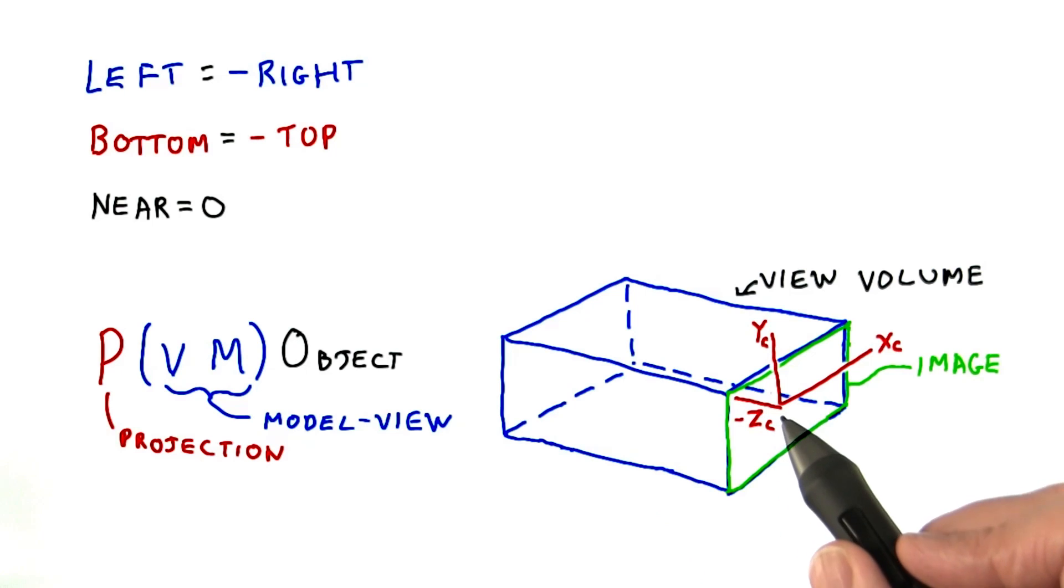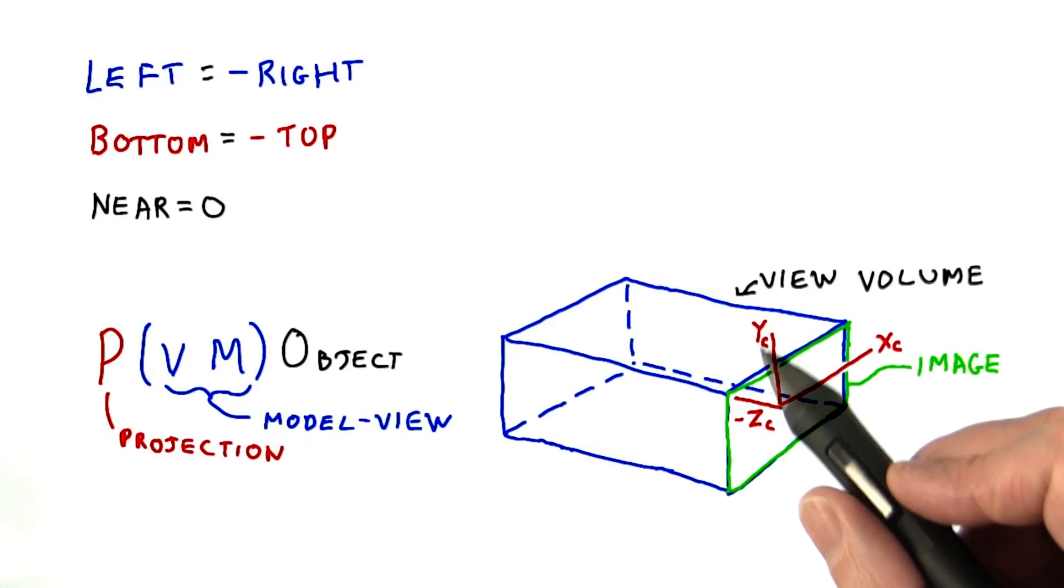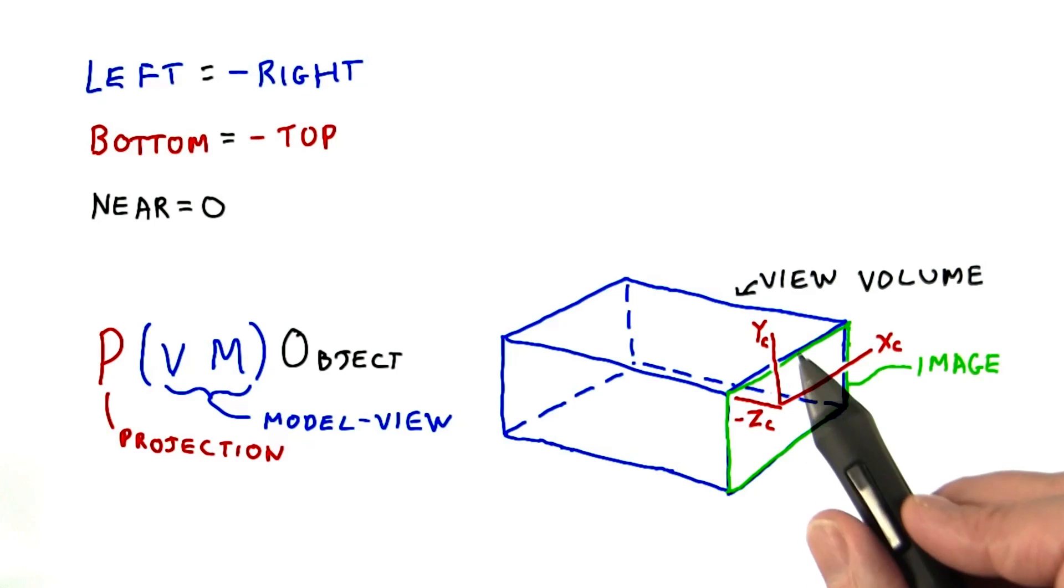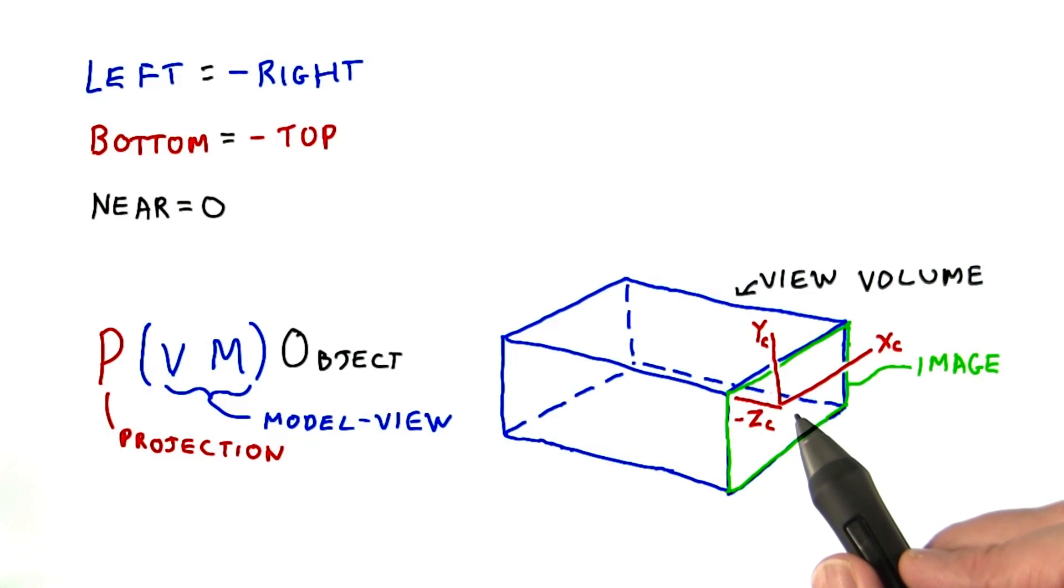You may have been wondering, why are we looking down the negative Z axis? This is done because it makes for a right-handed coordinate system for the camera. The Y direction is up, X is to the right, giving a Cartesian coordinate system for the image formed. To keep things right-handed, the Z axis must be pointing toward the viewer, meaning we have to look down the negative Z axis.